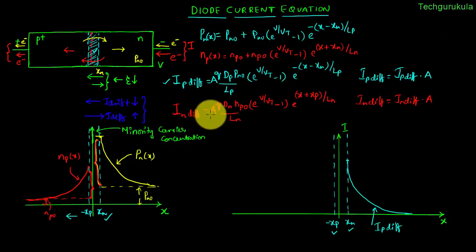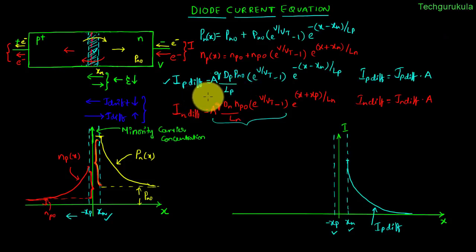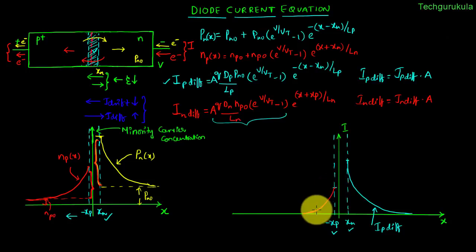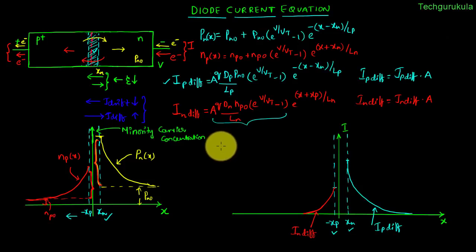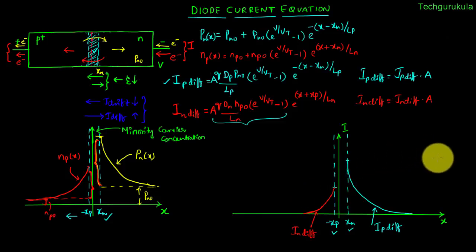This current component is I_p,diff. Similarly, let us plot I_n,diff. At x = −x_p the value of this function is its full magnitude as the exponential equals 1. And since n_p0 is less compared to p_n0 — because the p-side is highly doped compared to the n-side — the magnitude of I_n,diff at x = −x_p would be smaller. The diffusion current of electrons decreases as we go deeper into the p-side. But when we apply a constant potential, the current through the p-n junction should be constant, whereas we are seeing here that current actually changes with respect to distance — so we are missing some point.